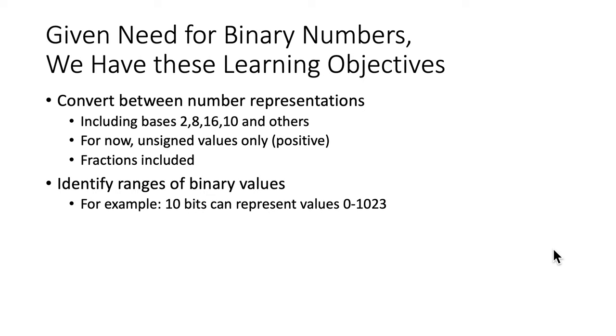Now we'll touch base with our learning objectives again. Since we are going to be working with binary numbers, we have these learning objectives: going between bases 2 and 10 for sure. Also, we'll throw in there base 8 for octal, 16 for hex, and we'll talk about base conversions with an arbitrary base value, that's a radix value. For now, we'll just talk about unsigned values, positives. We will talk about fractions, and as we go through this, hopefully you'll develop a better sense for the ranges of binary values that are associated with a given number of bits. Like with 10 bits we can represent values 0 to 1023.